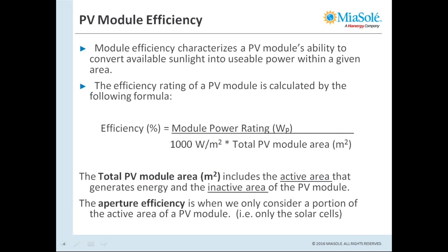The formula tells us that efficiency equals the module power rating divided by 1,000 watts per meter squared, multiplied by the module area. The 1,000 watts per meter squared comes from the STC standard used widely in the industry to base the nameplate rating of the product. The PV module area is the total area of the PV product, which includes both the active area and inactive area. If you only use the area of the PV cells to calculate efficiency, you get what we call the aperture efficiency, which excludes inactive areas like the frame border or, for a Mia Soleil flex module, the tab area where the junction boxes are located.